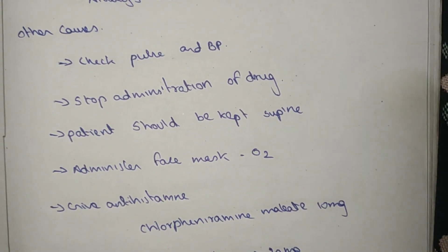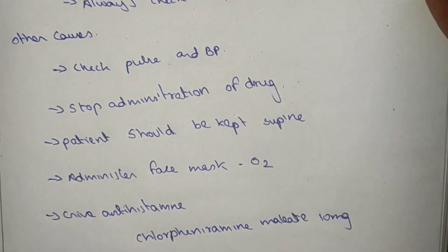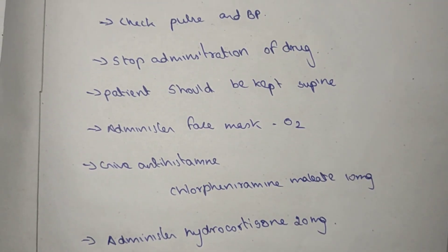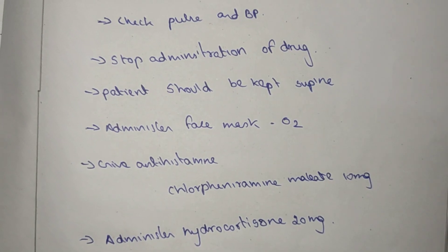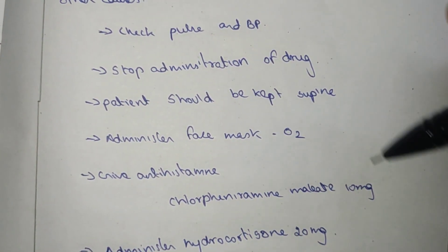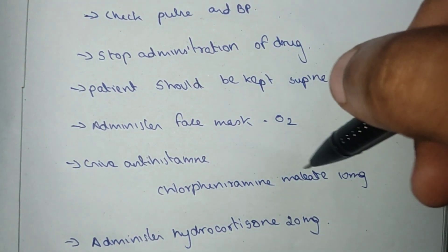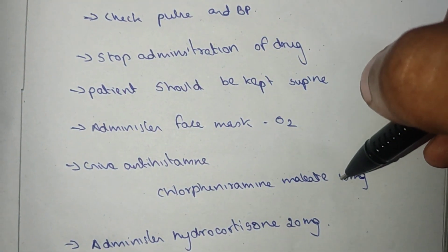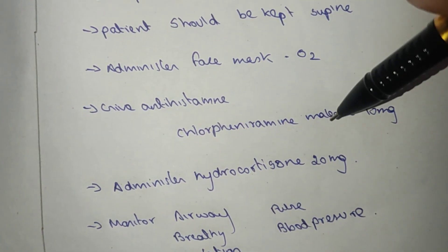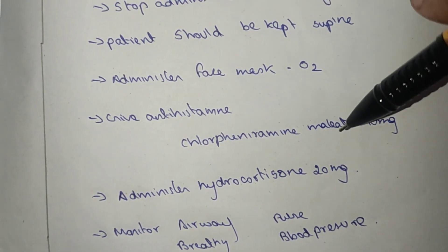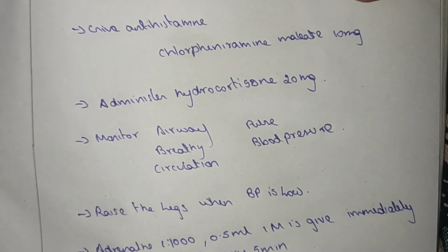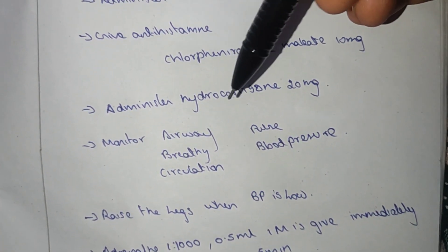Give antihistamine — chlorpheniramine maleate 10 mg. Administer hydrocortisone as a corticosteroid. Monitor ABC: A for airway, B for breathing, and C for circulation.